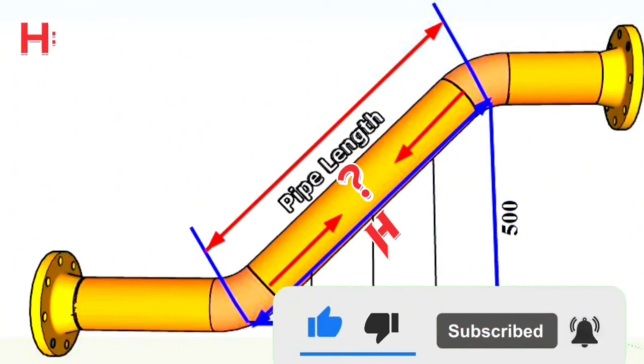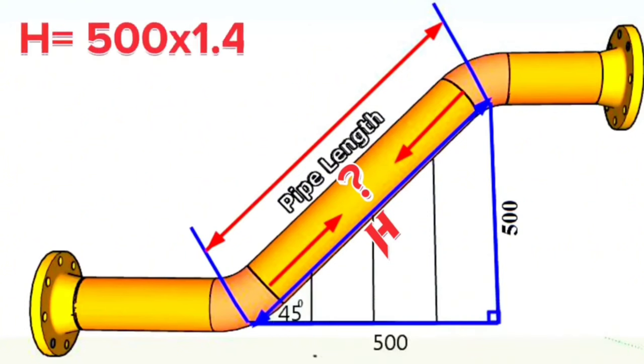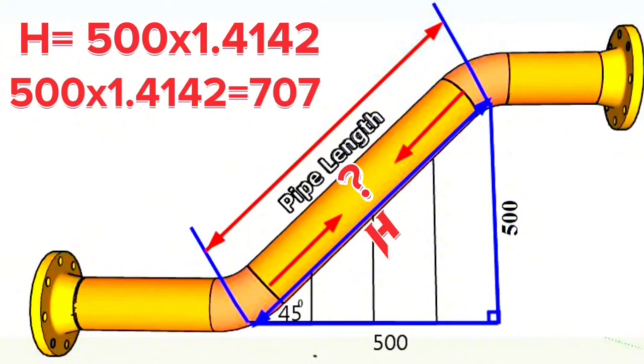That is, h is equal to 500 multiplied by 1.4142. We continue the calculation and find that 500 times 1.4142 is equal to 707 millimeters. The length of your hypotenuse is 707 millimeters.